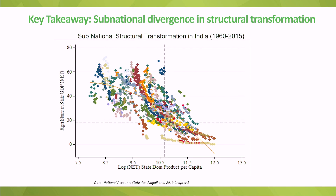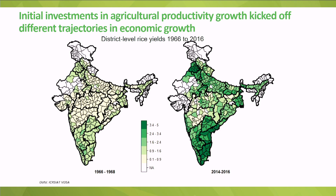If you look at different states of India — India comprises 30 states — all are at different stages of structural transformation. On the Y-axis we have agriculture's share in total output, and on the X-axis is per capita state GDP. Different states, represented by different colors, have different slopes over time. This differential pattern happened because of initial endowments and investment in agriculture back in the 1960s and 70s, when a technology shock to the economy led to the growth patterns we have today — kick-started by agriculture, which has traditionally been the main driver of economic growth across the world.